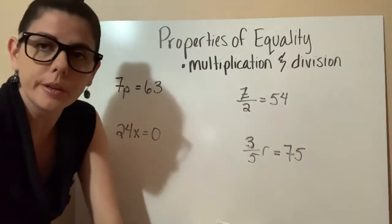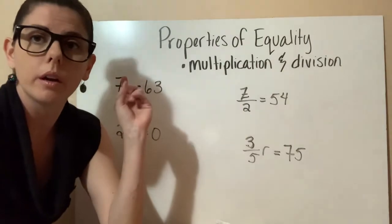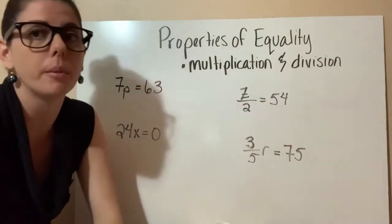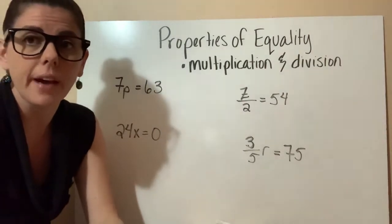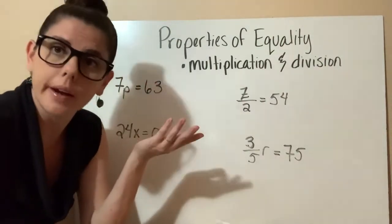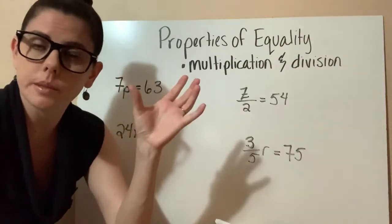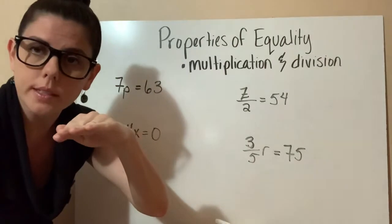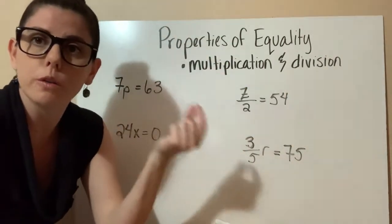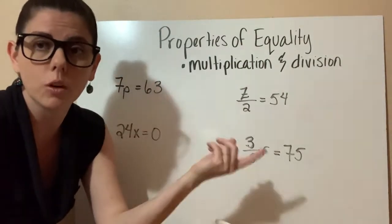To continue our discussion on properties of equality in section 2.2, we are going to be covering multiplication and division properties of equality. So instead of adding and subtracting from both sides, we're going to be multiplying and dividing from both sides. The concept is the same — whatever you do to one side of the equal sign, you do to the other. The purpose is to solve for the variable and figure out what that variable equals to make the equation true.